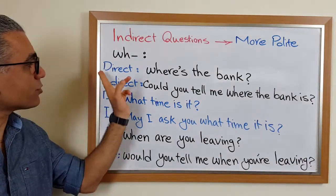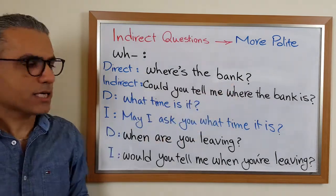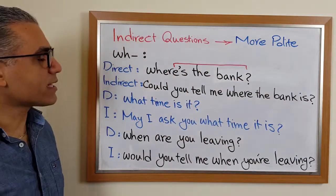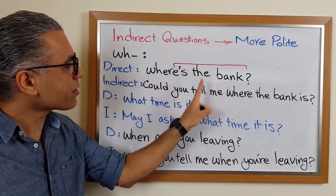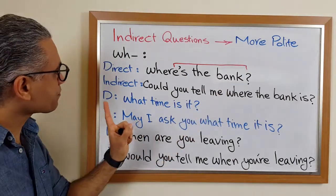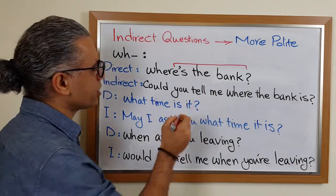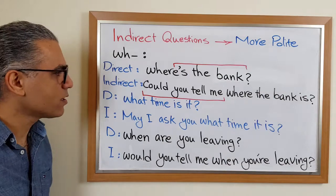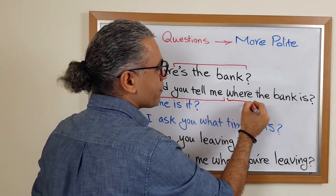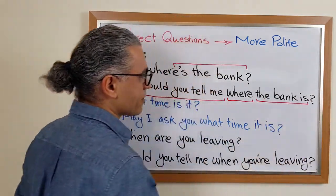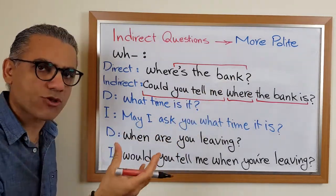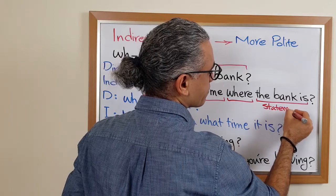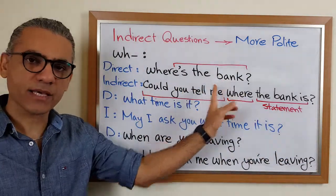These are three examples of direct questions and then indirect questions. Look — 'Where's the bank?' Apart from the WH word, the rest looks like a yes or no question: 'is the bank.' Here, 'the bank' is our subject. So we say 'Could you tell me' — and we have other options like 'May I ask you' or 'Would you tell me.' Could you tell me where the bank is. When we write the indirect question, we switch it back to the structure of a statement. That's why we don't say 'is the bank' anymore — we say 'the bank is.'